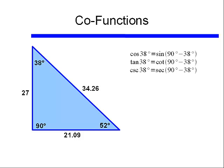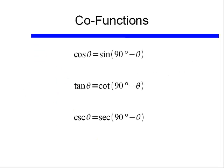So cosine of an angle equals the sine of 90 degrees minus that same angle. Likewise, tangent of 38° equals cotangent of the complement of 38°, and cosecant of 38° equals the secant of the complement of 38°.